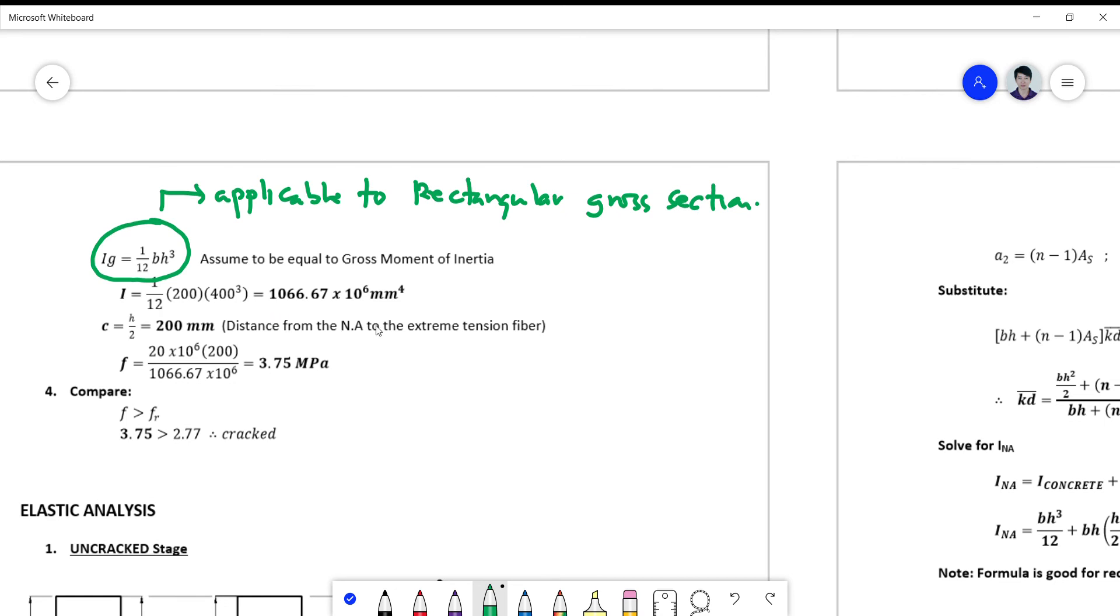And your c is simply the distance of your neutral axis to the topmost fiber which is in tension. So your tension fiber is at the bottom, so this is your c equals simply h over 2. So h is 400 and you divide it by 2, you get 200 millimeter. So f now becomes 20 times 10 to the 6, this is the moment, this is the distance c, and the moment of inertia. You get now 3.75 megapascal.